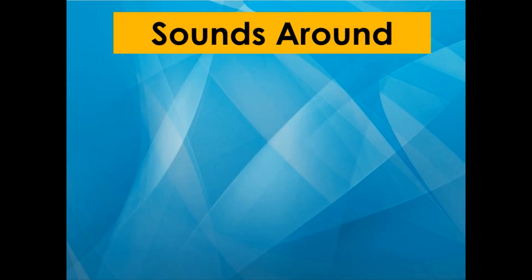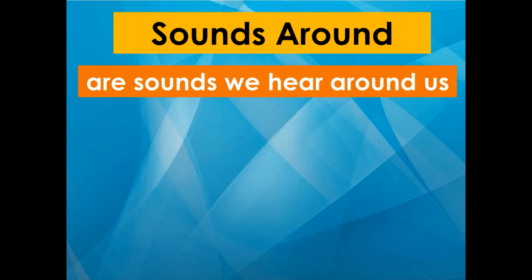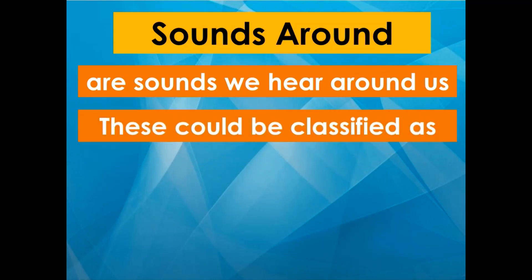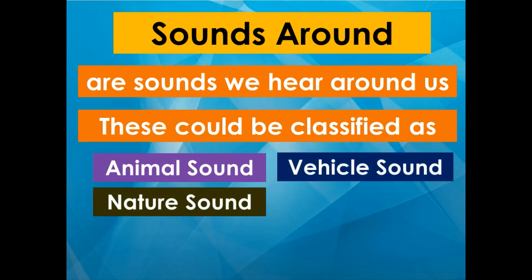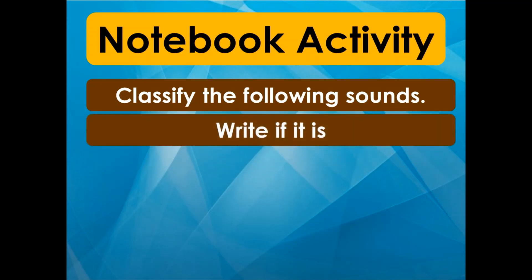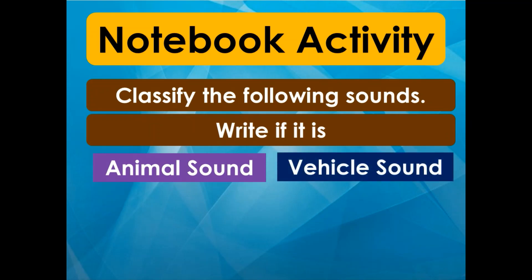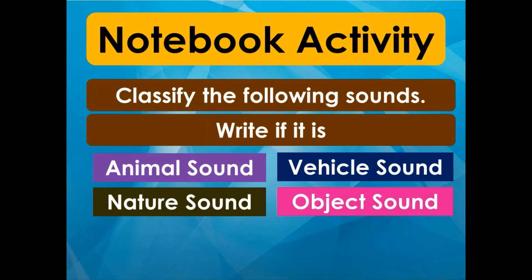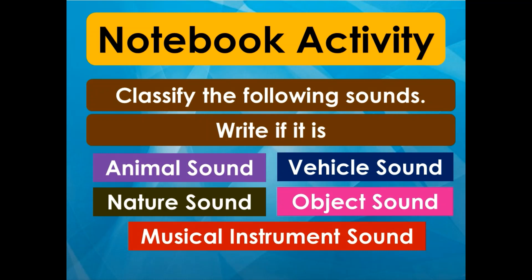Now let's have a recap. What are sounds around again? Sounds around are sounds we hear around us. These could be classified as animal sound, vehicle sound, nature sound, object sound, and musical instrument sound. Now, are you ready for your activity? Kindly get your notebook and pencil. What you're going to do is classify the following sounds — write if it is an animal sound, a vehicle sound, a nature sound, an object sound, or a musical instrument sound.